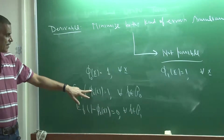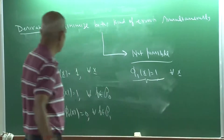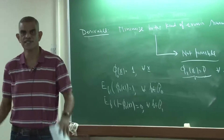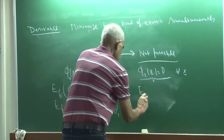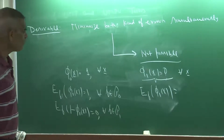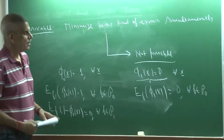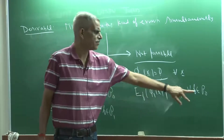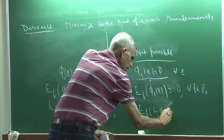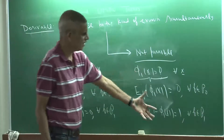Wrongly not rejecting H₀ means claiming θ ≤ 500 when actually θ > 500, i.e., the new plant is good but I say it is not. At worst, my status quo is maintained and I lose little. So in this case committing the Type 1 error (wrongly rejecting H₀) is more serious. One can always interchange H₀ and H₁ to interchange the roles of Type 1 and Type 2 error, and by convention we treat Type 1 error as the more serious one.